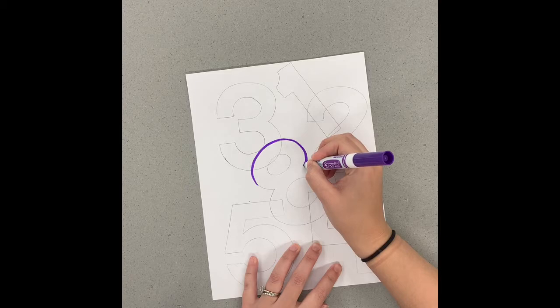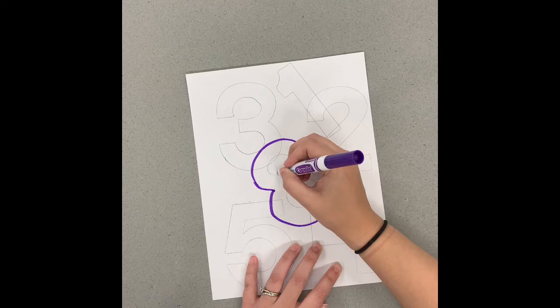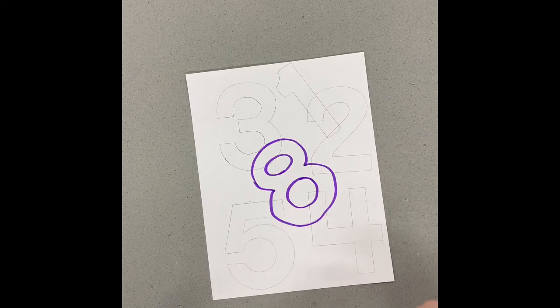You'll notice your numbers are overlapping and so you can either choose to draw right over it with the next color of marker or kind of go around it. I'll do both so you can see that happen.